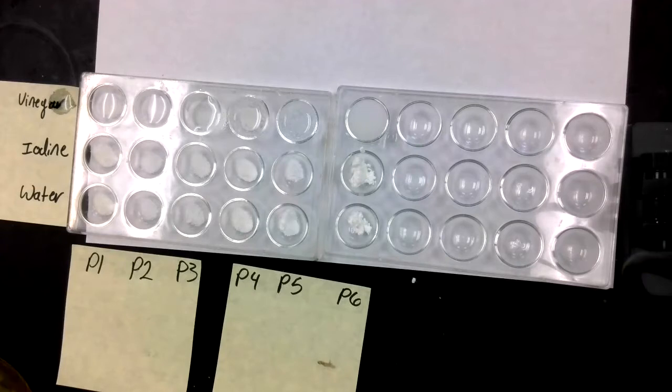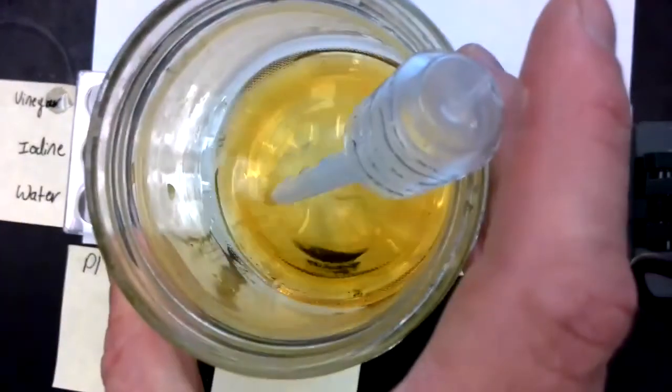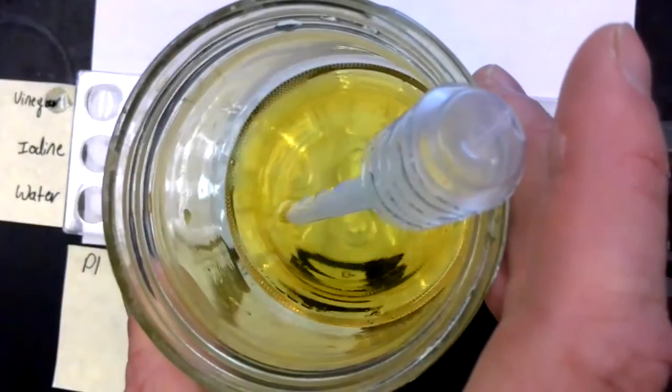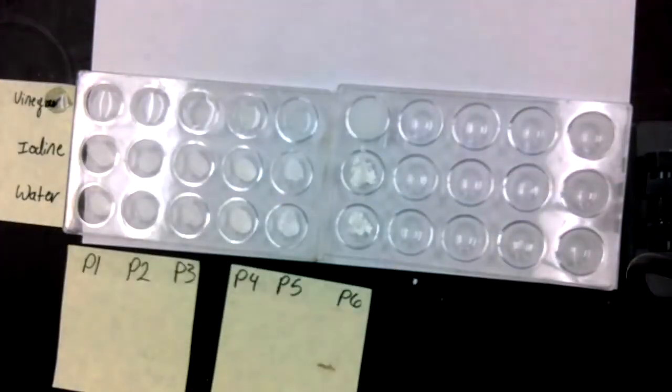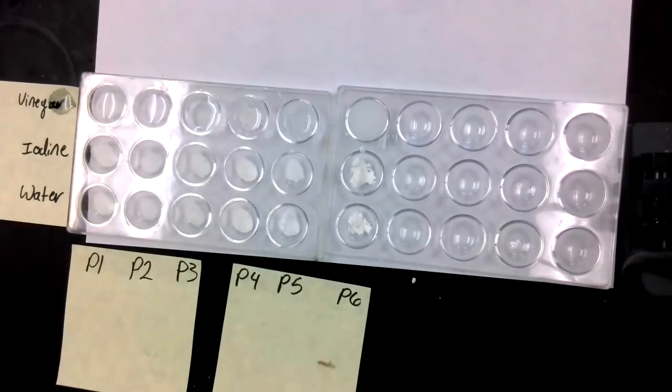All right, we have some iodine. What color is this iodine? Yellow. Okay, brown, yellow. Golden-ish.